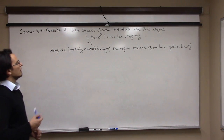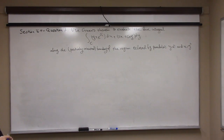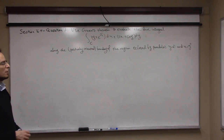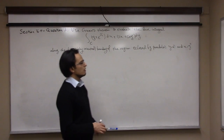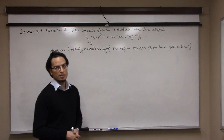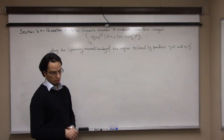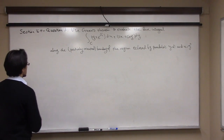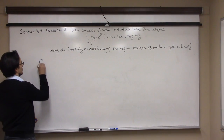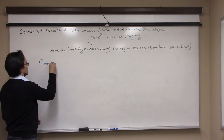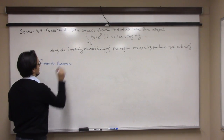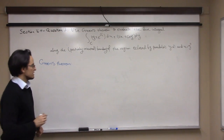The integral is along the positively oriented boundary of the region bounded by the parabolas y equals x squared and x equals y squared. Let me first recall what Green's theorem is.